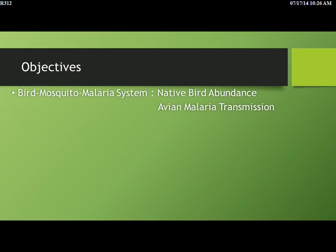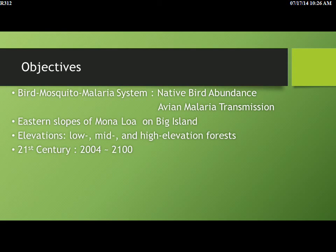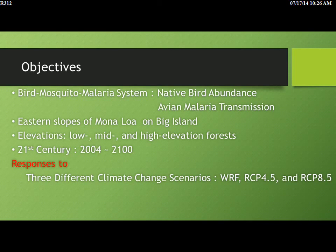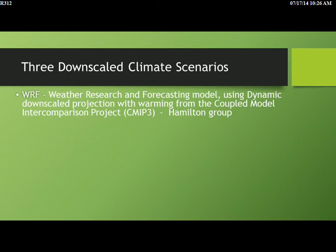I'm going to show outputs from the modeling process. The key focus is what's going to happen to native birds, but also what's going to happen to malaria transmission going into the future. We're focused on the eastern slopes of Mauna Loa — this may not apply well to other places in Hawaii. We'll keep things confined to three elevation ranges, project out to 2100, and look at three climate scenarios: WRF, RCP 4.5, and RCP 8.5 — some way to bracket what may happen with future climate.